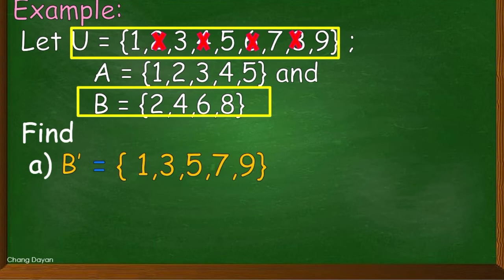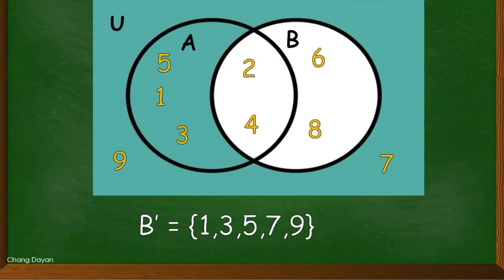And our Venn diagram here is like this, wherein 2, 4, 6, 8 are not shaded. And the part where 1, 3, 5, 7 are located has been shaded.